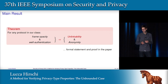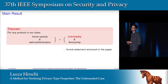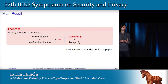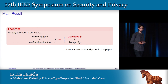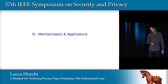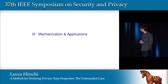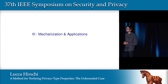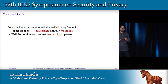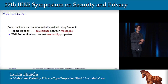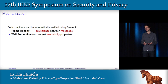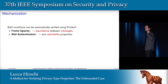Now I can state our main theorem: for any protocol in our class, if the protocol ensures our two conditions, then it ensures unlinkability and anonymity. Now a few words about mechanization. In practice, the previous theorem is interesting only if we can verify our conditions, and we show that this is the case. We can use ProVerif to do so. Using some encodings, we can reduce frame opacity to an equivalence between messages, and well-authentication to a bunch of reachability properties. Both can be verified precisely using ProVerif. And we built UKano on top of ProVerif that automatically checks our conditions.